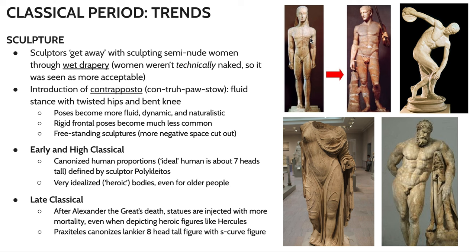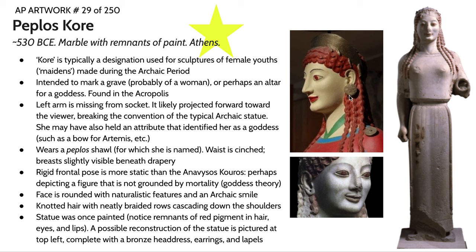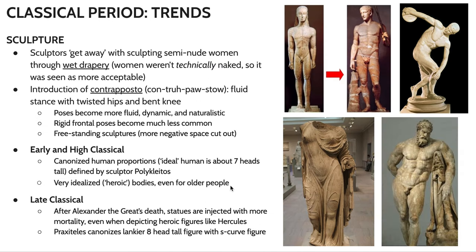These poses are becoming a lot more naturalistic and dynamic, especially in comparison to the Korae statues we see earlier. Men continue to be depicted naked in most sculptures, but we're seeing a transition in how women are depicted — from being very fully clothed, like the Peplos Korae where there's not much suggestion of the figure underneath, to this curious phenomenon called wet drapery. The figures are not technically naked, so it's seen as more socially acceptable, but you can see pretty much everything. We're also seeing statues become more dynamic in their use of negative space — compare the limited negative space in earlier works to the Doryphoros, and then to the massive negative space in the discus thrower.